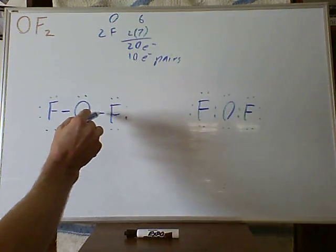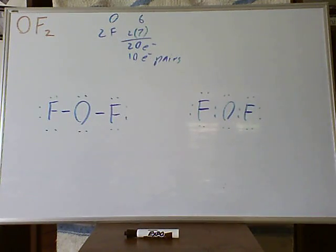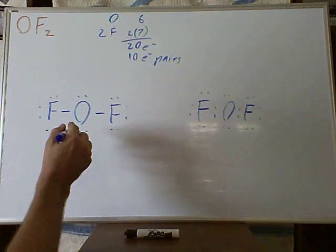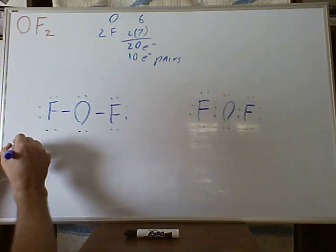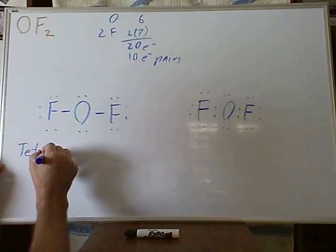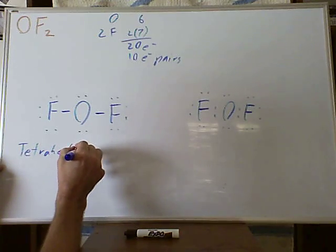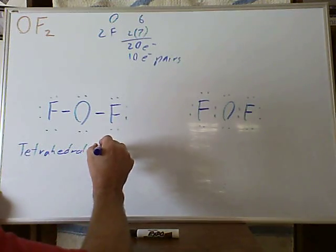Oxygen has 1, 2, 3, 4 pairs around it. So 2 bonding pairs, 2 lone pairs. So 4 pairs means a tetrahedral electron geometry.